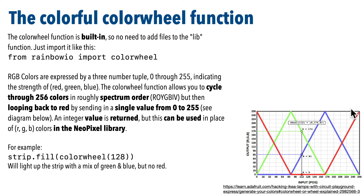Even though this chart shows RGB values, this function actually returns a single integer. A NeoPixel function that accepts an RGB tuple should be able to accept the integer returned from color wheel. So for example, if I sent 128 to color wheel, I'd get back a single integer — number 32,385 — but the NeoPixel library will interpret that as no red, but half green and half blue, just as if I sent it a tuple containing 0, 128, and 128.